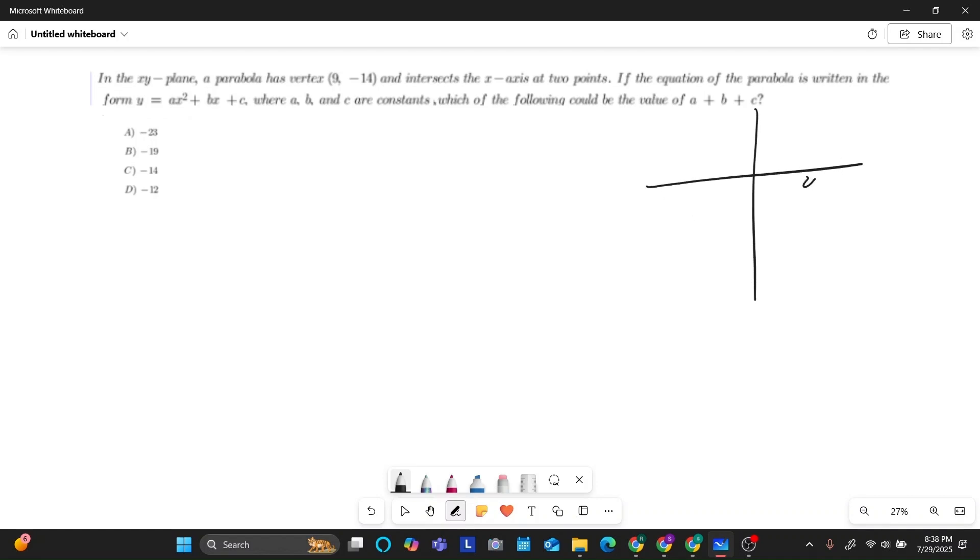So let's just say that this is 9 and this is negative 14. That's going to be our vertex. They're telling us that it has to touch the x-axis at two points. So it has to open upward, right? That's the only way that it touches at two points. But if a parabola opens upward, you know that your a value has to be positive. And this is crucial because prior to this, we didn't know if a was positive or negative. But now we know it opens upward, so a is positive.